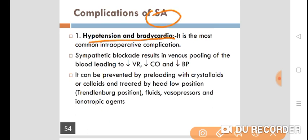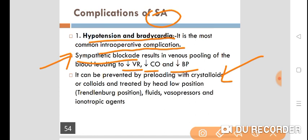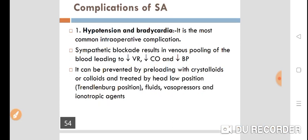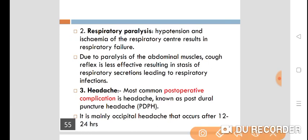The most common intraoperative complication is hypotension and bradycardia, caused by sympathetic blockade resulting in venous pooling of blood, decreased venous return, decreased cardiac output, and hypotension. It can be prevented by pre-loading with crystalloids, and treated with head-low (Trendelenburg) position, fluids, vasopressors, and inotropic agents.